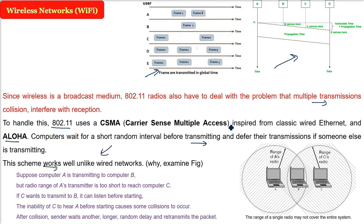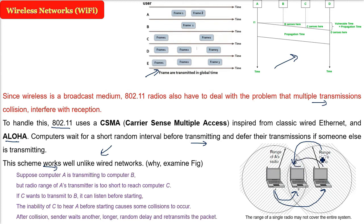Consider a scenario: computer A is transmitting to computer B, but computer C is out of A's radio range — they cannot hear each other. If C wants to transmit to B, it listens but cannot detect A's transmission. So if C starts transmitting while A is already transmitting, a collision will occur at B. This is the hidden node problem. The solution is that the sender waits a random time and then re-transmits the packet.